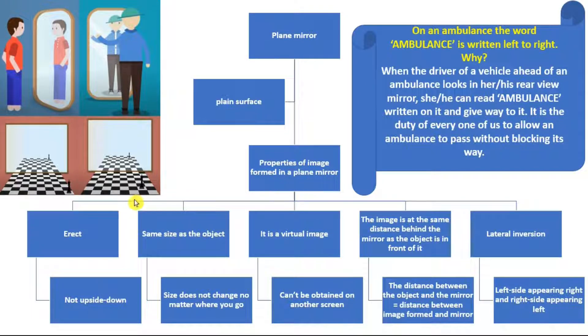Properties of image formed in a plane mirror. The first property is that the image formed is always erect. Erect means it's straight, it's not upside down. Then the image formed is always the same size of the object. You take it front, you take it back, left, right, wherever you take it, the size is always going to be the same. So size does not change wherever you go.